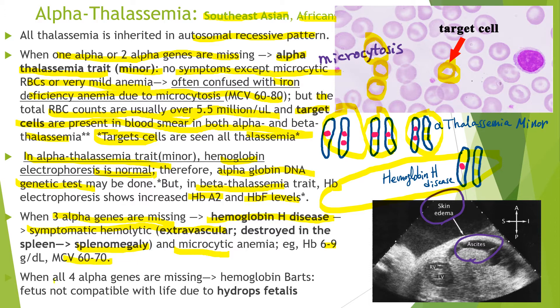When all four alpha genes are missing, it forms hemoglobin Barts, composed of four gamma globins. The fetus is not compatible with life due to development of hydrops fetalis. This ultrasound photo of a fetus with hydrops fetalis shows ascites, skin edema, and pericardial effusion.